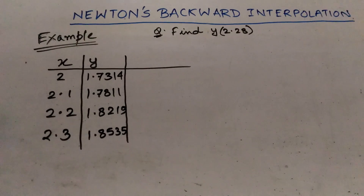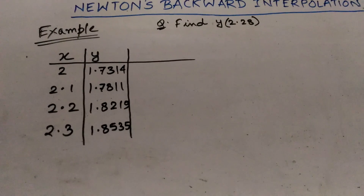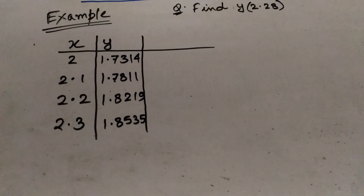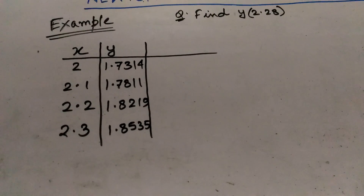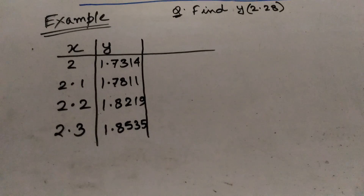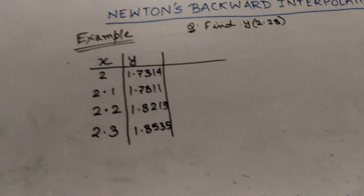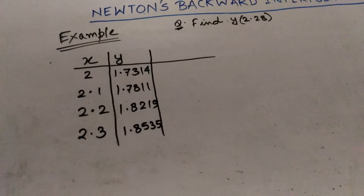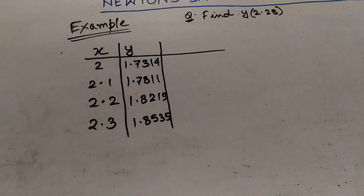Now let us look at an example to make the concept clearer. The values of x are 2.0, 2.1, 2.2, and 2.3. The corresponding values of y are 1.7314, 1.7811, 1.8219, and 1.8535. We have to find the value of y for x equals 2.28. Since there are four elements in the columns, we will construct three difference columns.